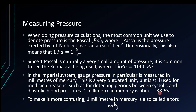You'll mostly see this when talking about blood pressure systems. Anyone doing the HPAT will know about systolic and diastolic blood pressures. When people measure their blood pressure and say something like 134 over 80, one is systolic and one is diastolic, and both are measured in Torr or millimetres of mercury.